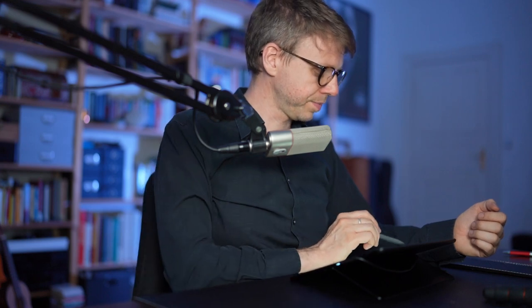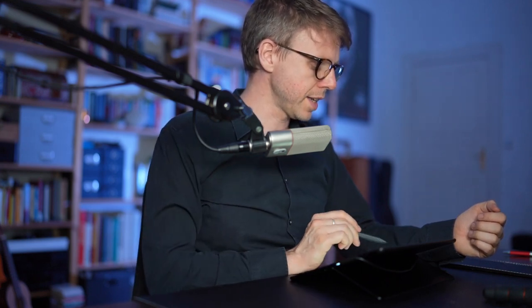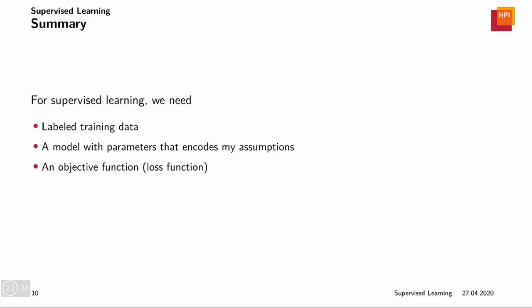Now with this, I want to close the session. And quite quickly to summarize and repeat, we discussed the basic concepts of supervised learning. And the main ingredients are labeled training data - so basically inputs and outputs. A model that is parameterized. And this modeling encodes our assumptions on the data. We need an objective function. So it's a function that allows us to take two different parameter values or two different models and compare them.